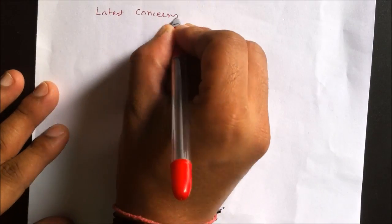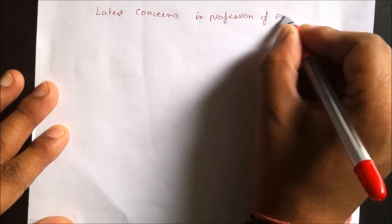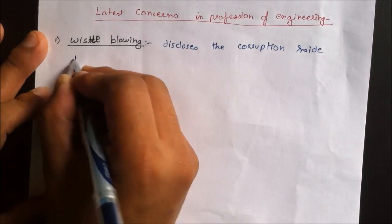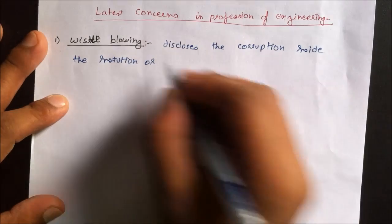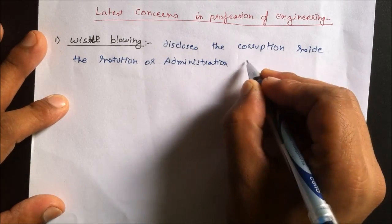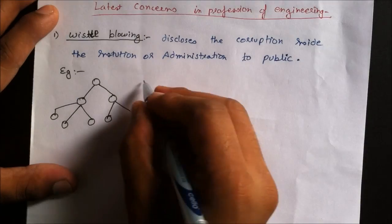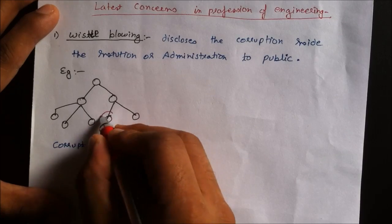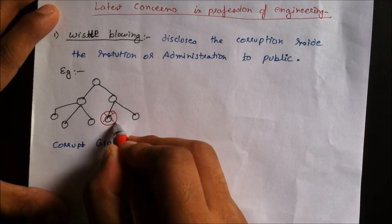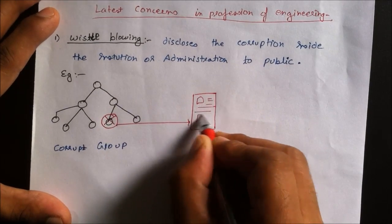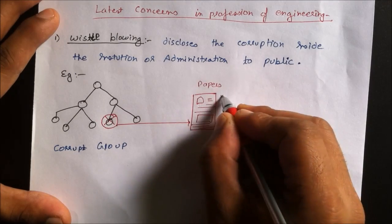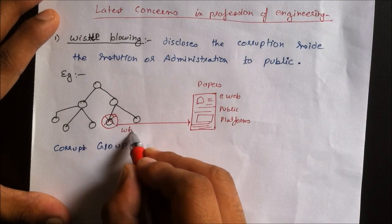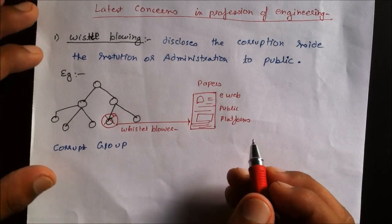Now let us discuss some latest concerns in the profession of engineering. Whistleblowing is generally reporting corruption or wrongdoing happening in an institution or administration to the outer public. For example, if a person in a corrupt group decides to share all corruption notices to newspapers, the web, and public platforms, and the corruption goes viral — that particular person is known as a whistleblower.